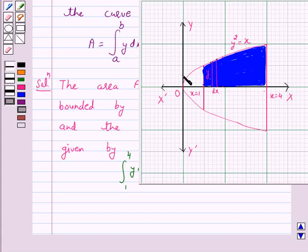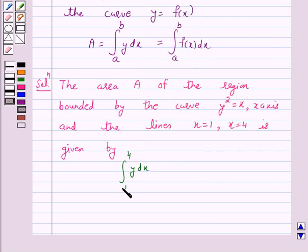We can think of the total area A of the shaded region between the x-axis and the lines x = 1 and x = 4 and the curve y² = x as integral from 1 to 4 of y dx.